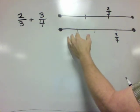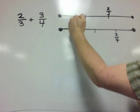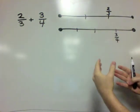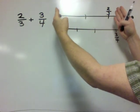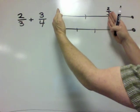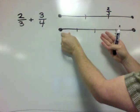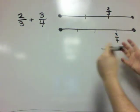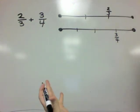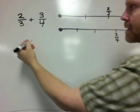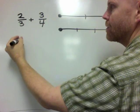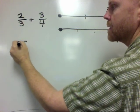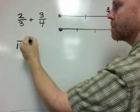We have to cut these intervals into something so that, without changing the actual length, we get the same number of intervals. That's what's called getting a common denominator. So in this case, a common denominator is going to be 12.